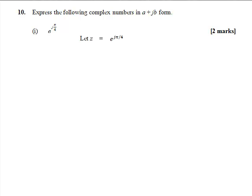Let z equal e to the j pi over 4, and then we can rewrite that as cos pi over 4 plus j sine pi over 4. Pi over 4 is 45 degrees if that's easier for you. And the sine and the cos of 45 degrees are both 1 over root 2. So we can take 1 over root 2 outside a bracket of 1 plus j.